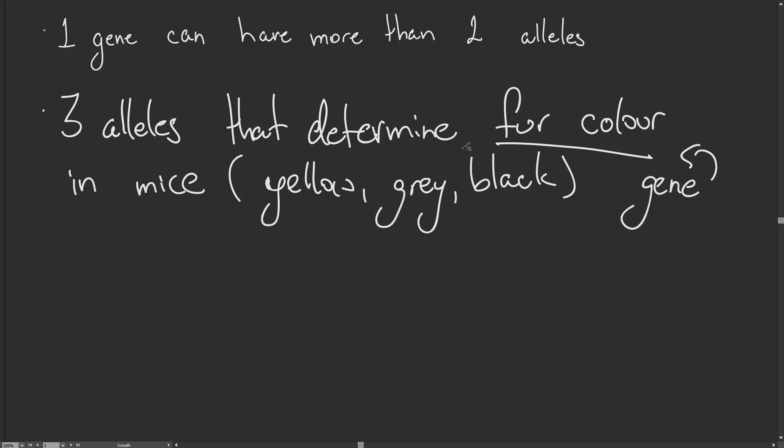The next example is the three alleles that determine blood group in humans. There's A, B, and O, and there are three different alleles that determine these.